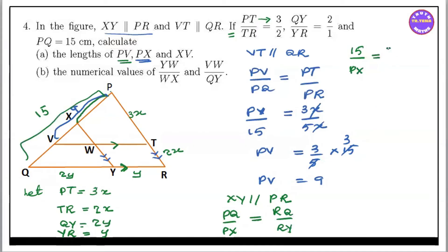RQ by RY — this is PQ by RQ. So 2Y, so 3Y by RY. So PX equals 1, so PX equals 5.